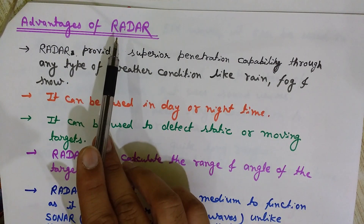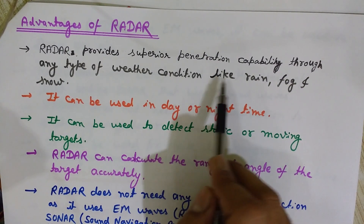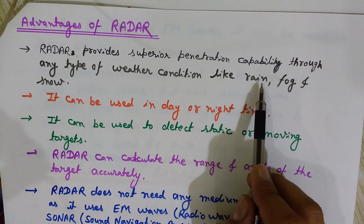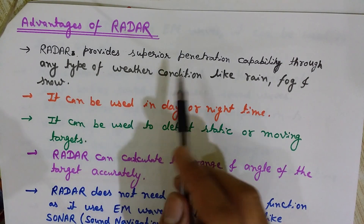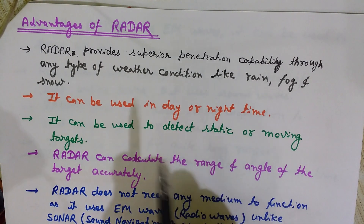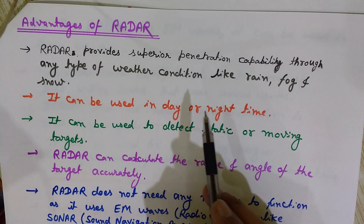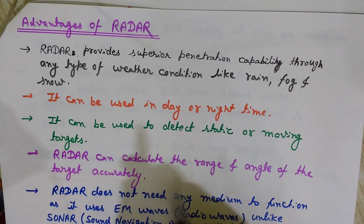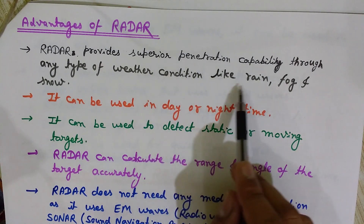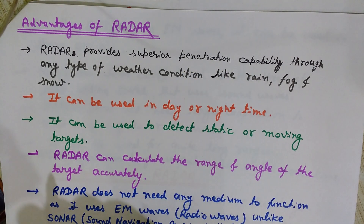Now we will see the advantages of radar. Radar provides superior penetration capability through any type of weather condition like rain, fog, and snow. We can use radar even in bad weather conditions. It can also be used at night time — day and night equally — because it operates by transmitting radio waves via the transmitting antenna, received back by the receiving antenna. Rain, fog, and snow do not affect the radio waves much, so it can penetrate these weather conditions easily.